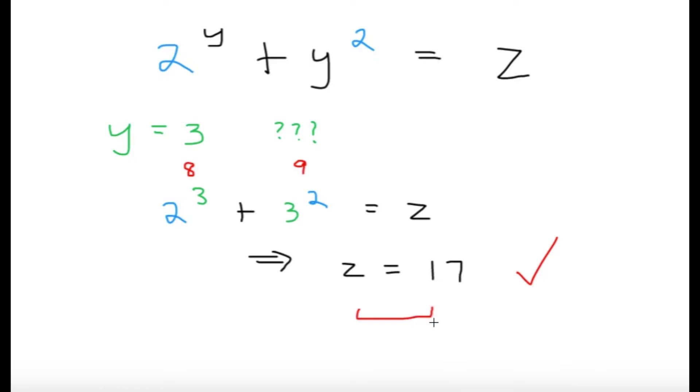So it seems that x equals 2, y equals 3 is going to give z equals 17, which is indeed correct. So to answer the question, x plus y plus z, that would simply be 2 plus 3 plus 17, so 22. And 22 is indeed correct.